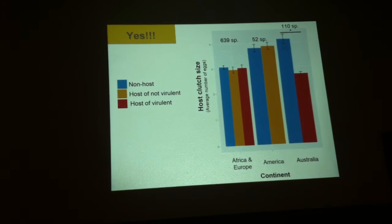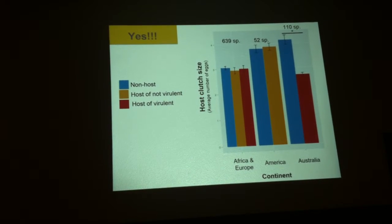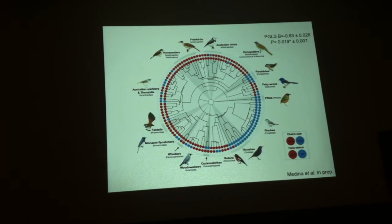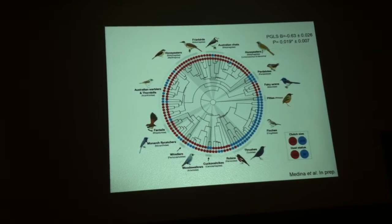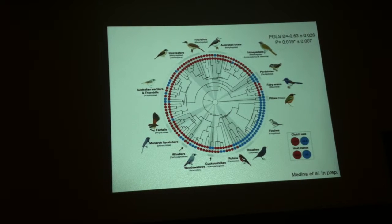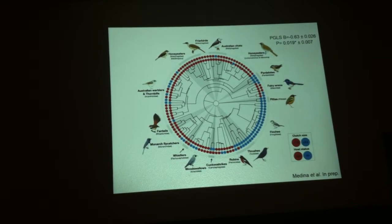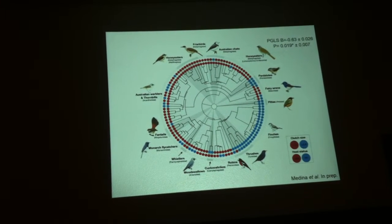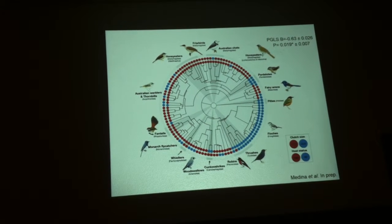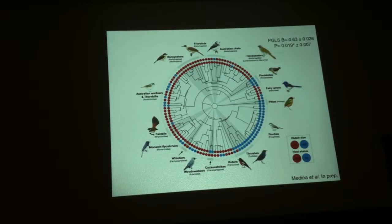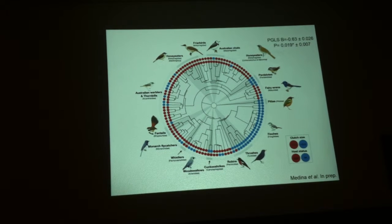However, in Australia there is a very strong difference. Hosts of virulent parasites, which are mainly cuckoos, have a much smaller clutch size than non-hosts. This is true after taking into account phylogenetic controls and other variables known to influence clutch size, such as latitude, body size, and nest type. Species that have a smaller clutch size, shown in red in the outer circle, are also more likely to be hosts, shown in red in the inner circle. So this association would support the idea that being a host has led to the evolution of a smaller clutch size.